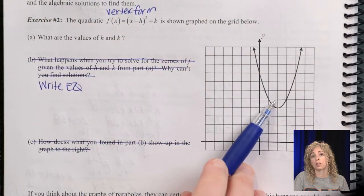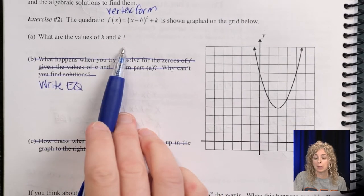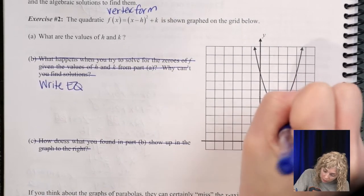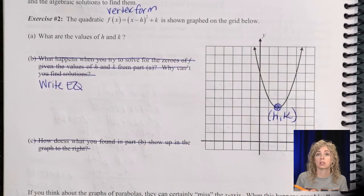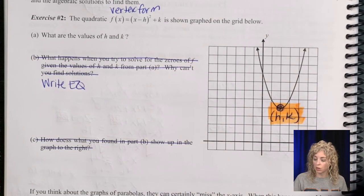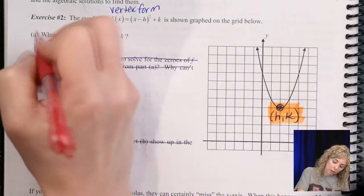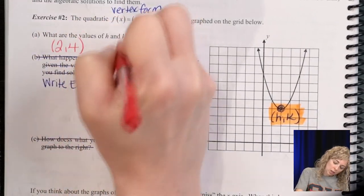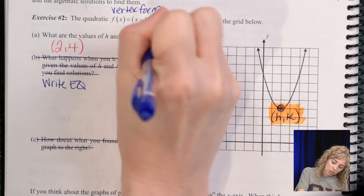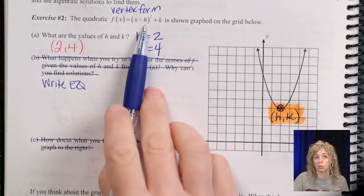So we have a quadratic equation graphed here. It's not telling us what it is, but it wants us to identify what the h and k would be. Well, the h and k are right here, h, k, where the vertex is. So this point right here is your h, k. So if we note the coordinates, we go right to a 1, 2, 3, 4, the point is 2, 4. So we know that our h is 2, k is 4.